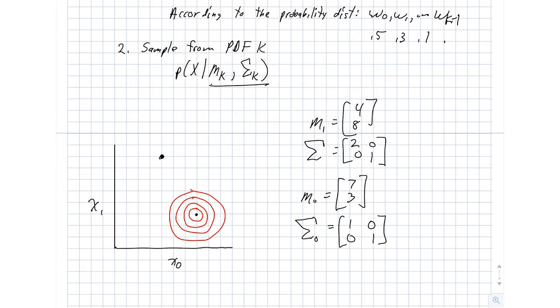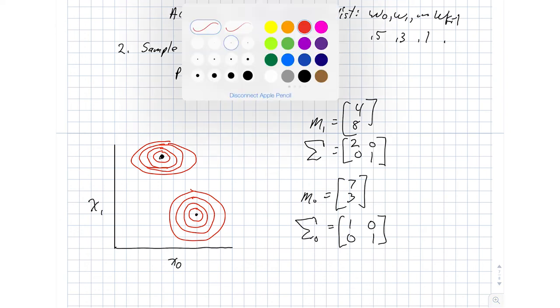What our topo map representation looks like is this. It's a set of ellipsoids or ellipses in two dimensions. If it's three or more then it's an ellipsoid. Where we really emphasize this x0 dimension more than the x1 dimension.